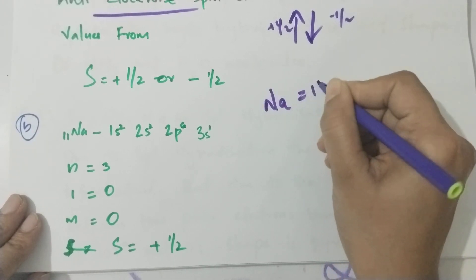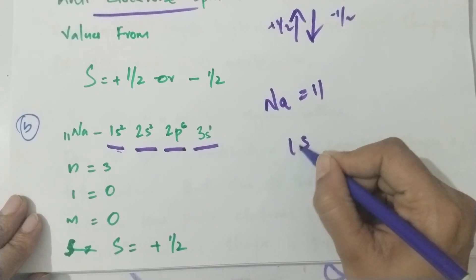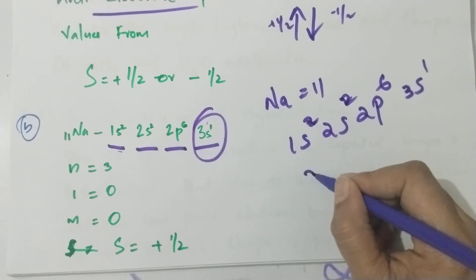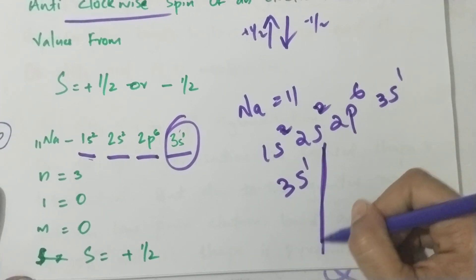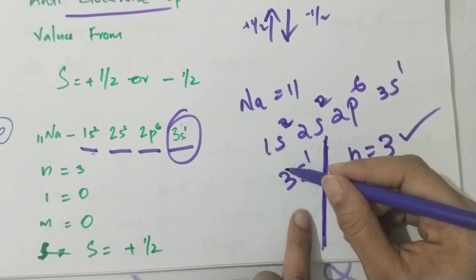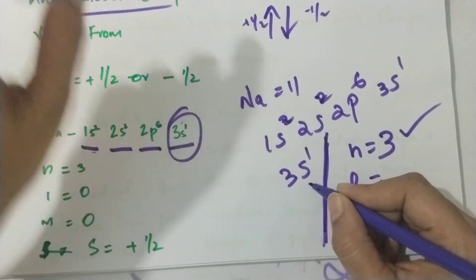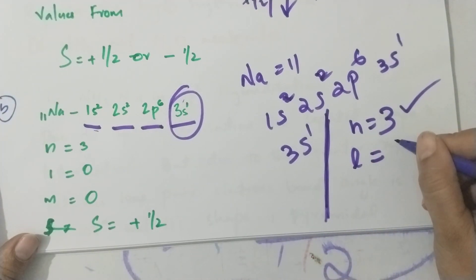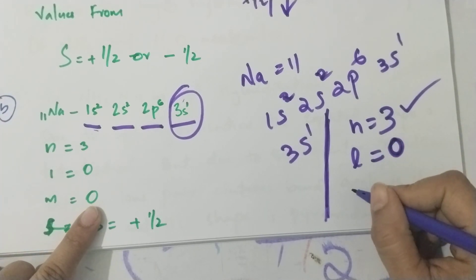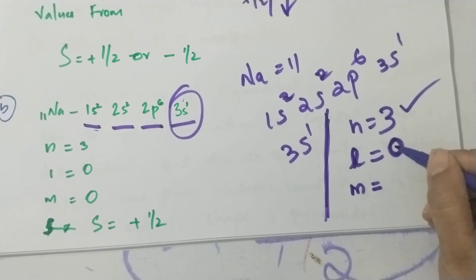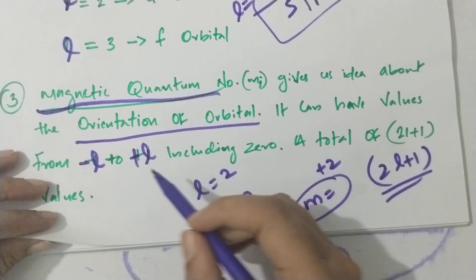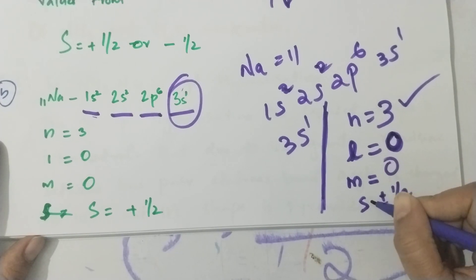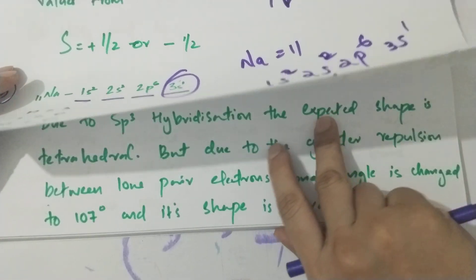For sodium, the atomic number is 11. Its electronic configuration is 1s2, 2s2, 2p6, 3s1. The last electron is in 3s1. So the principal quantum number n equals 3. Since it is an s orbital, l equals 0. Since l equals 0, m equals 0. And the spin quantum number s equals minus half.